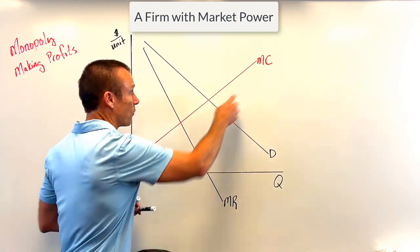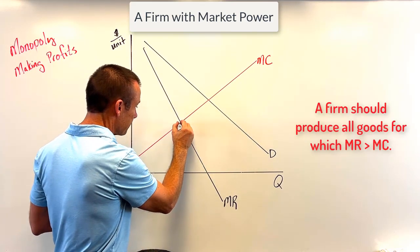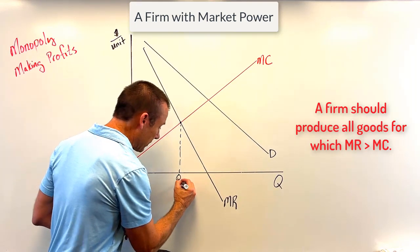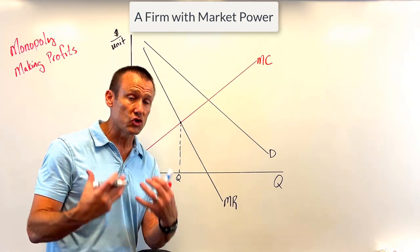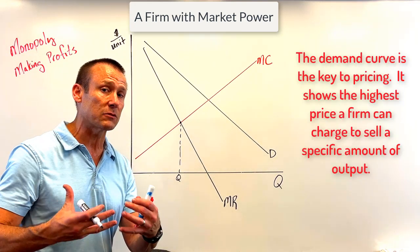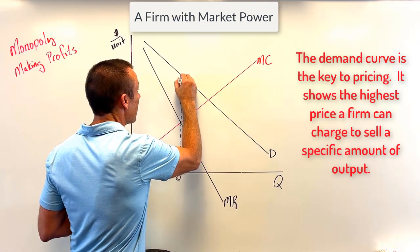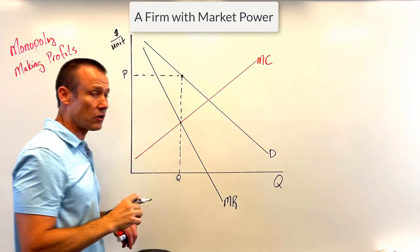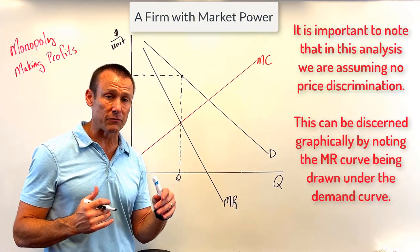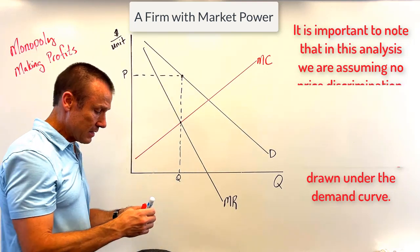I get my output from the MC and MR intersection — right there. Produce all goods for which MR exceeds MC. Now that I know my output, I want to find the maximum price the firm can charge to sell this level of output, and what tells me that is the demand curve. The demand curve shows the maximum price they can charge. Head right up to the demand curve — that's the maximum price. We're assuming no price discrimination because demand and MR are split from each other.